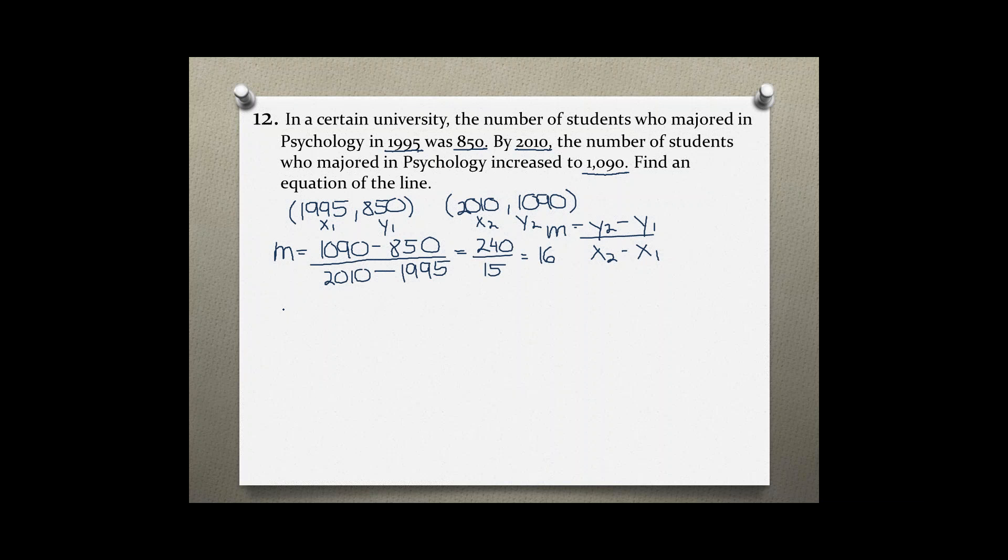As I said before, with one point you can use the point-slope form of an equation: y minus y1 equals m times x minus x1. Plug in the values that you know. So y minus, I'm going to use the first point which is 850.